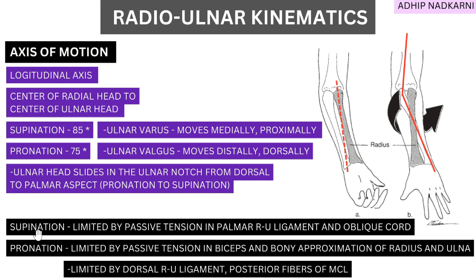Now, what structures limit this movement? Supination is limited by passive tension in the palmar radio-ulnar ligament and also the oblique cord. Pronation is limited by the dorsal radio-ulnar ligament, which is on the other side of the ulnar notch. Essentially the palmar and dorsal radio-ulnar ligaments limit supination and pronation respectively. Additionally, the posterior fibers of the MCL (medial collateral ligament) on the medial side also limit pronation.